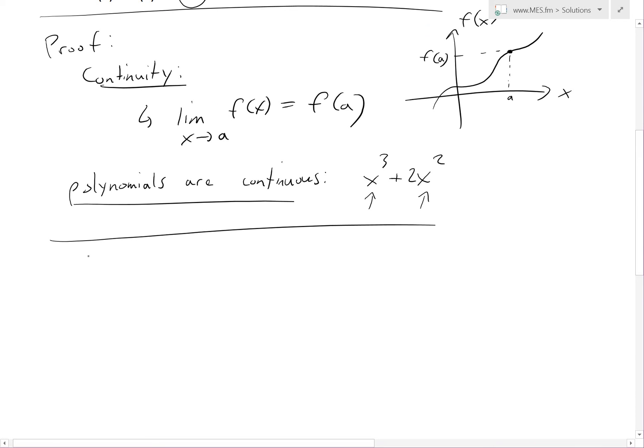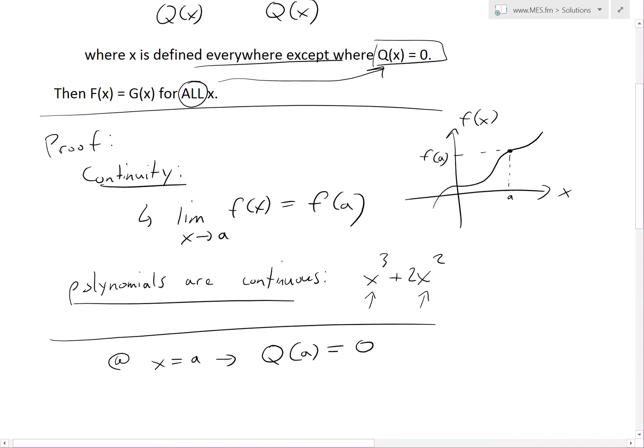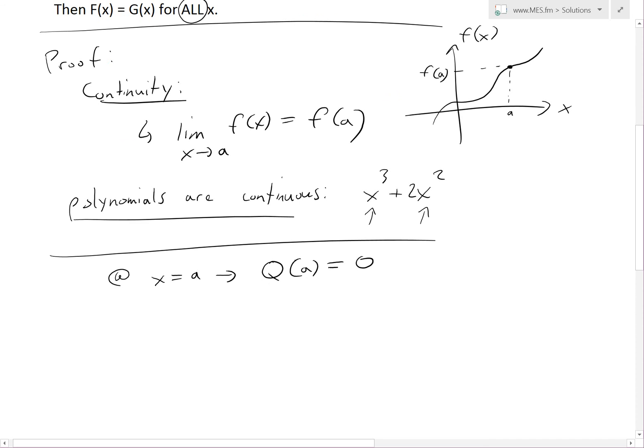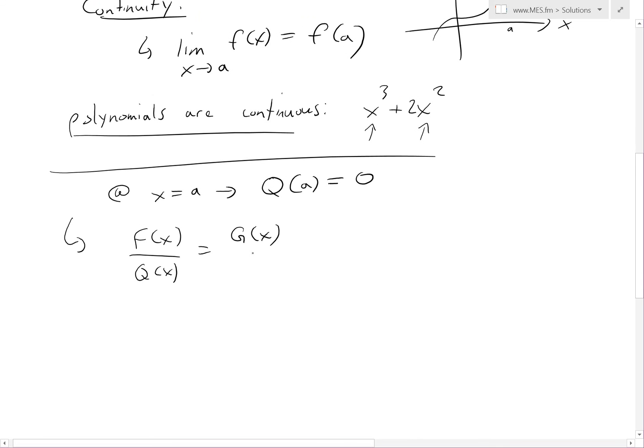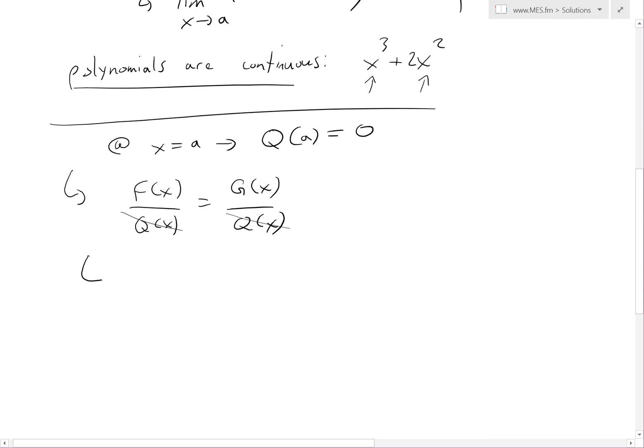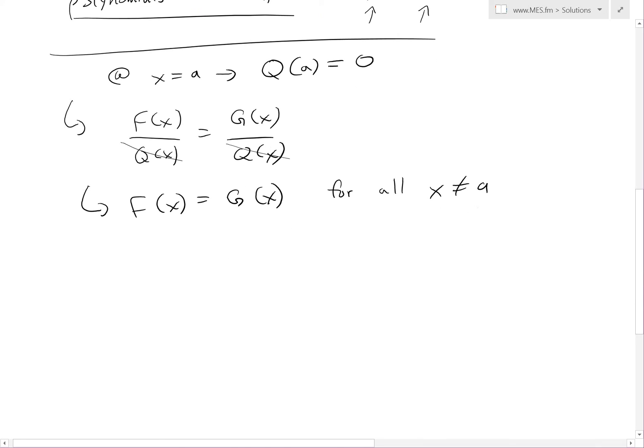So basically, since these are continuous, now let's just go back to, add, basically, x equals to a. Just pick a random point here where Q(a) is equal to 0, so that's the denominator right here. So if we're given that a is there, then we know that F(x) over Q(x) equals to G(x) over Q(x). So we know directly if we just cancel these out, you can multiply on both sides by Q(x). We get F(x) equals to G(x) for all x that's not equal to a.